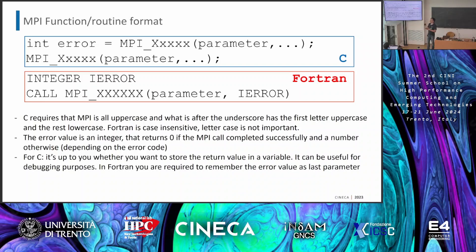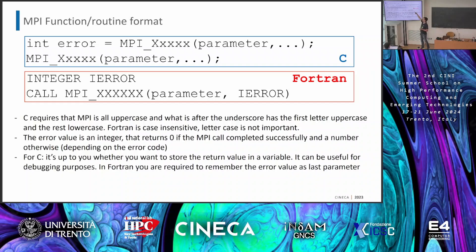The syntax: there is a specific syntax especially for C, because Fortran is case-insensitive. For all MPI calls, you write MPI underscore, then the name of the call, then the eventual parameters. For Fortran, you can write it all lowercase, uppercase, or mixed — it doesn't matter. For C, the specific syntax is: MPI all uppercase, underscore, first letter uppercase, and the rest lowercase. The error value is an integer. All things I have already said — so I move on.